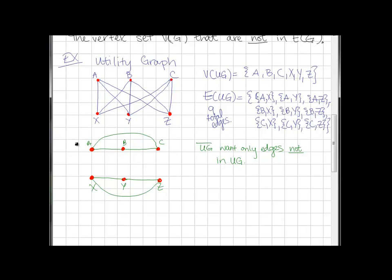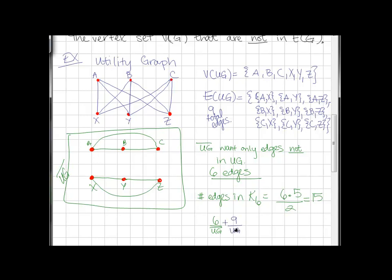So this new graph here is utility graph complement. How many edges does it have? I count 1, 2, 3 on top and 1, 2, 3 on bottom, so it has 6 edges. And of course, notice there are 6 possible vertices, and the number of edges in K_6 was 6 times 5 over 2, that's 15. And of course, the 6 from the graph complement plus the 9 from the original graph gives us that 15. And that's no surprise, we know when we put the two graphs together, a graph and its complement make a complete graph.